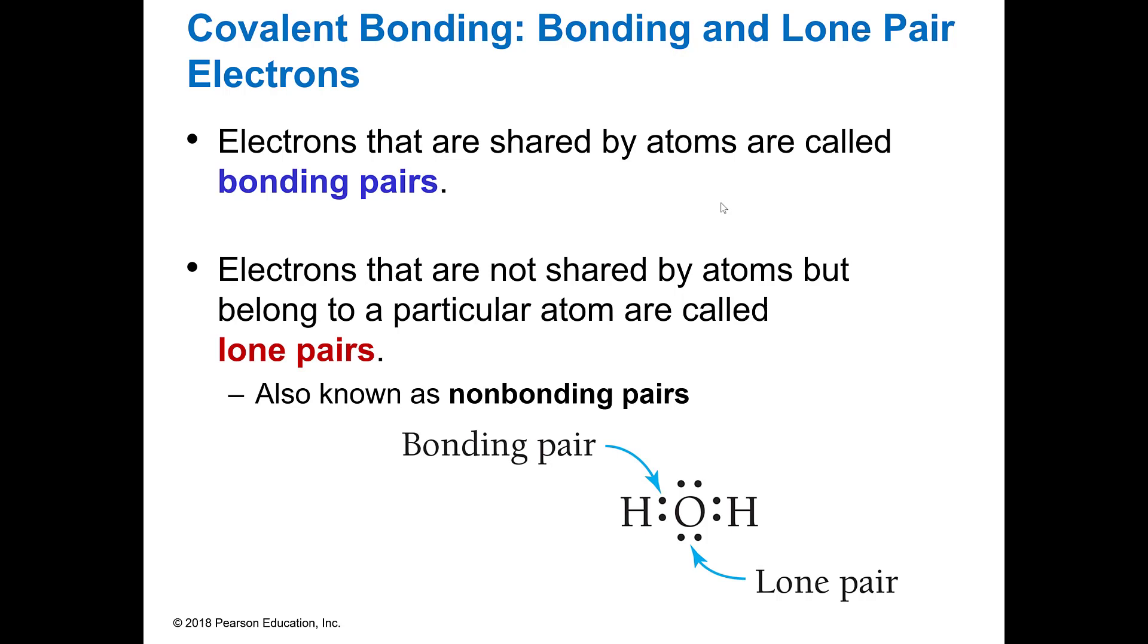When you do a covalent bond, you're bonding pairs of electrons together. So here's a bonding pair that you're sharing between the oxygen and the hydrogen and water. And then you have lone pairs, which are not bound to anything. So in this one, you have two bonding pairs, and then you have two non-bonding pairs.